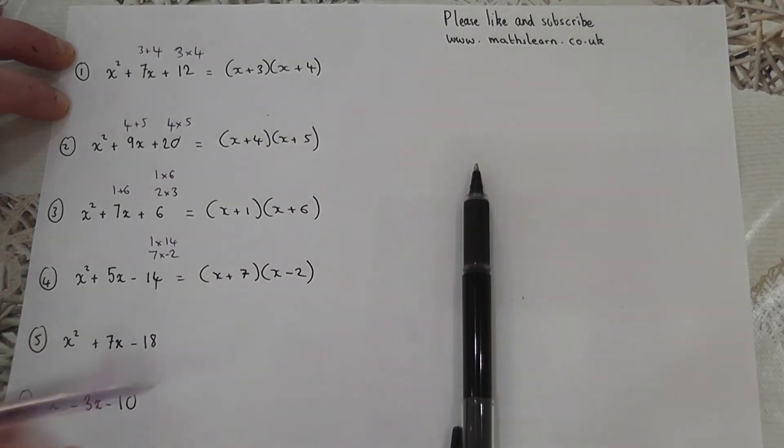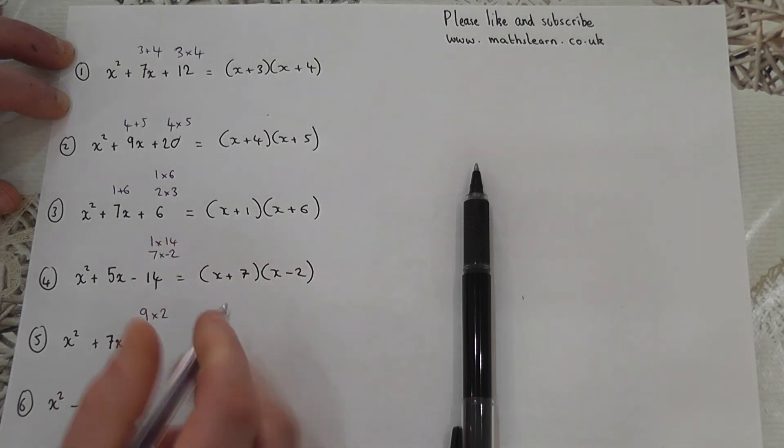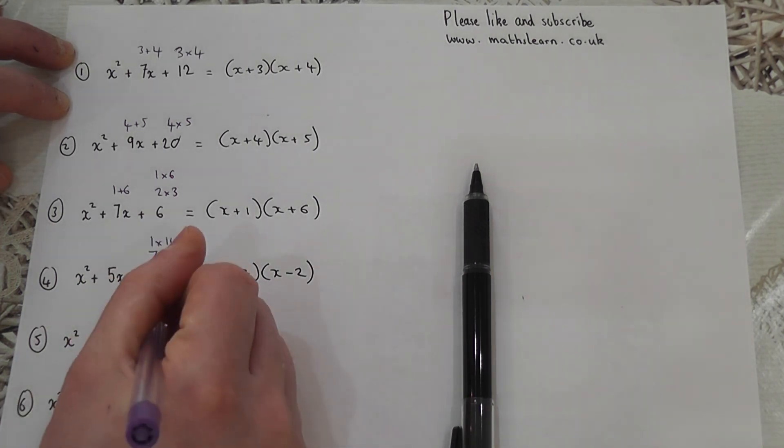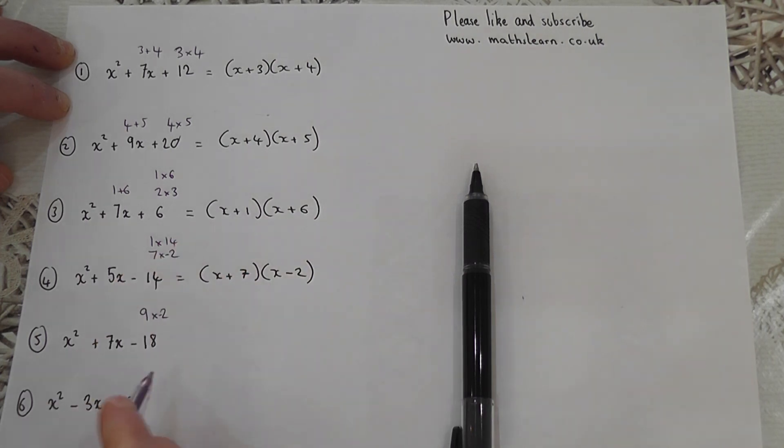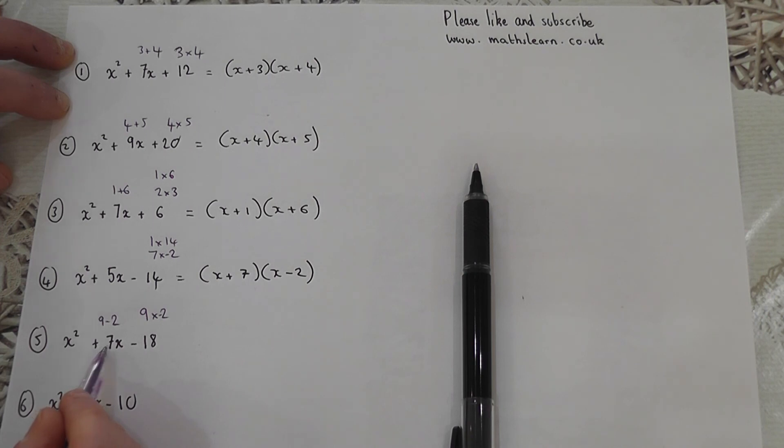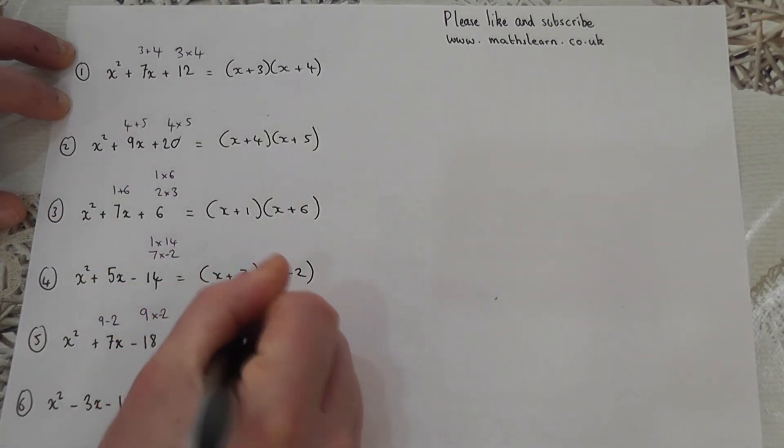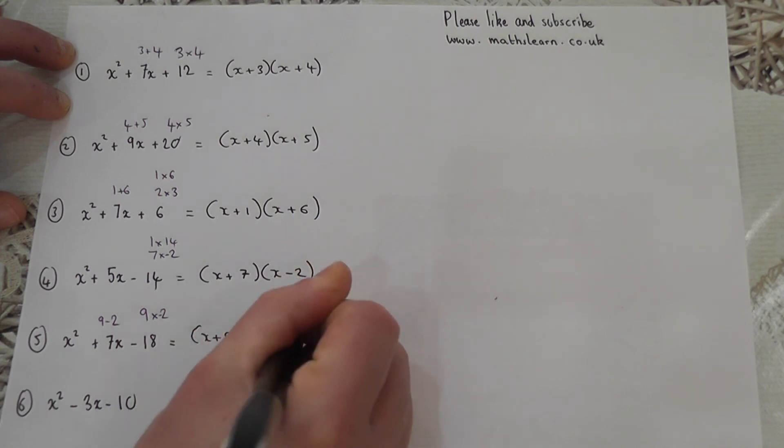When the number is negative, one of the numbers is positive and one is negative. If you look at 18, it's 9 times 2 or 3 times 6, but it's negative. If I make the 2 negative, that works, because 9 take away 2 makes 7. So the brackets are x plus 9 and x minus 2.